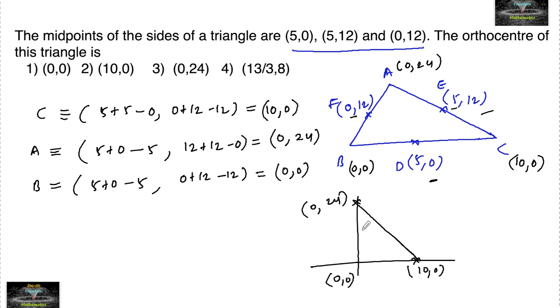Whereby we can say in this triangle ABC, the orthocenter is the origin where the right angle is formed. And hence we can say that the orthocenter of triangle ABC, the given triangle, is (0,0), which is the first option.